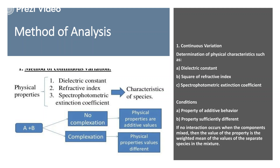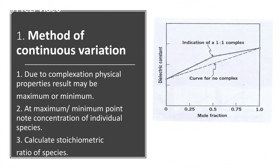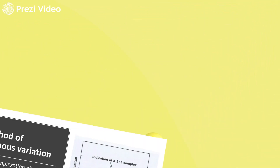It is very simple to understand. For example, if we are combining A and B, and if no complexation occurs, the physico-chemical properties are additive in nature. But when a complexation is formed, the physico-chemical property values are very different - they may be very high or very low, because the complex has altogether different properties. When we apply the method of continuous variation, the physico-chemical property results may be either minimum or maximum. At the minimum or maximum point, the concentration of individual species may vary, and by that we can calculate the stoichiometric ratio of the species. For example, when there is no complex formation you see a straight line for dielectric constant, but once a complex is formed the dielectric constant varies.